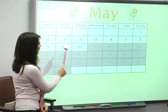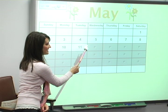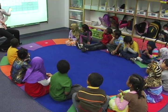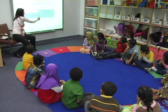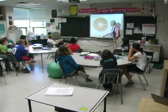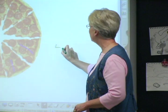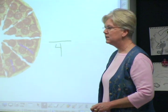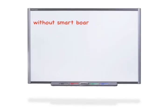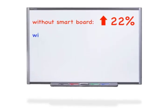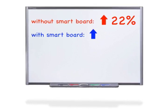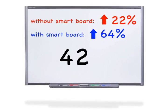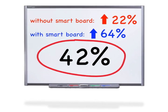We've shown that when we incorporate video or the visual into a classroom, kids achieve at higher rates. We gathered test scores from one classroom that had a smart board and one that did not. In the classroom without the smart board, children improved 22%. In the classroom with the smart board, children improved 64% — a 42% difference between the two classrooms.